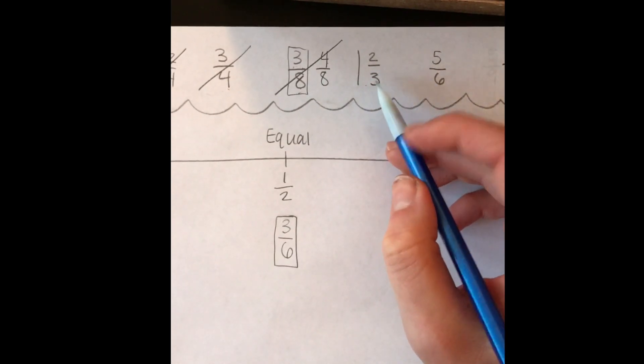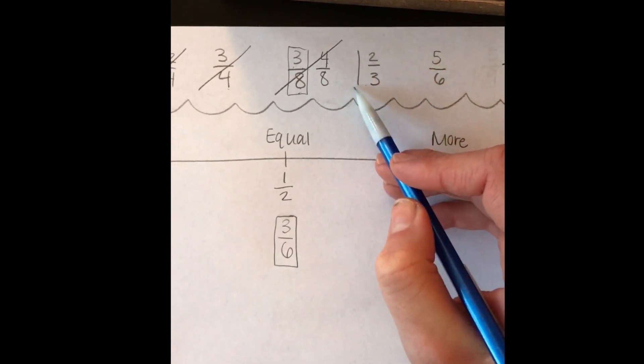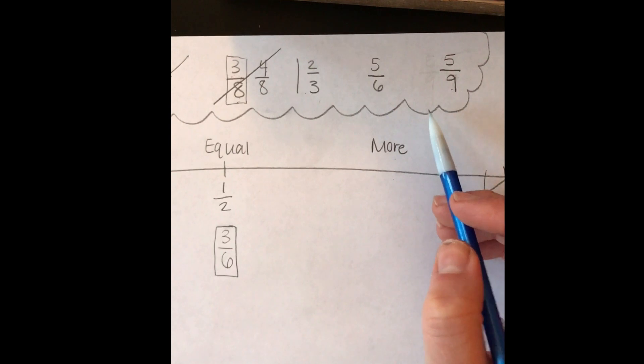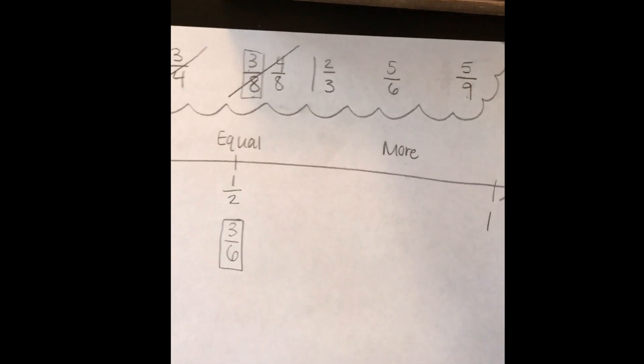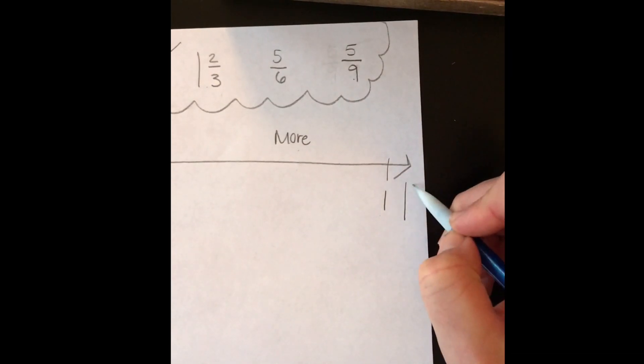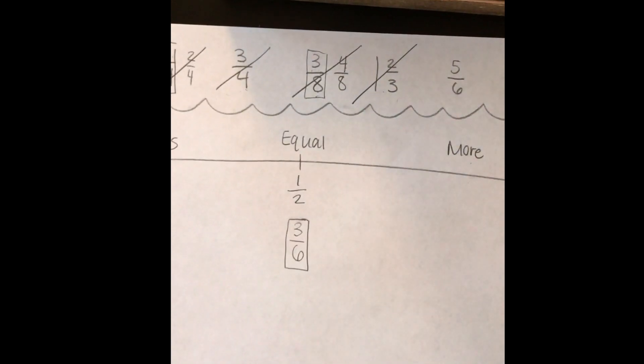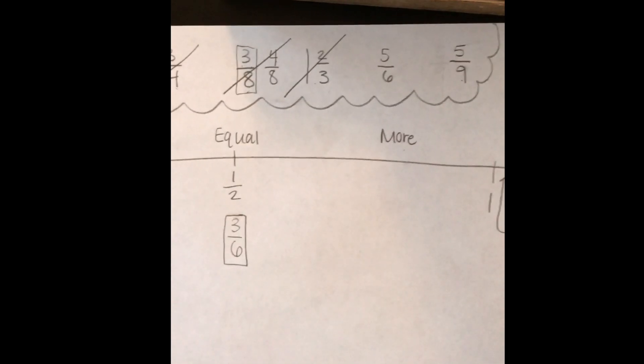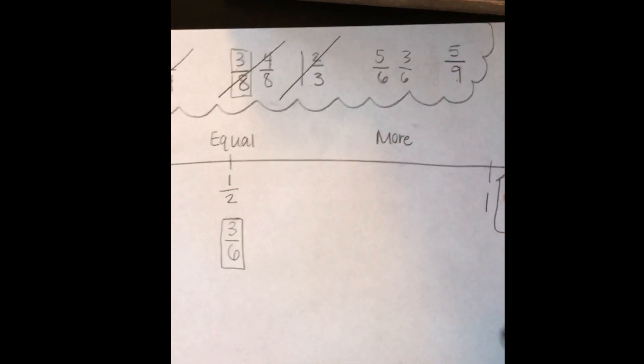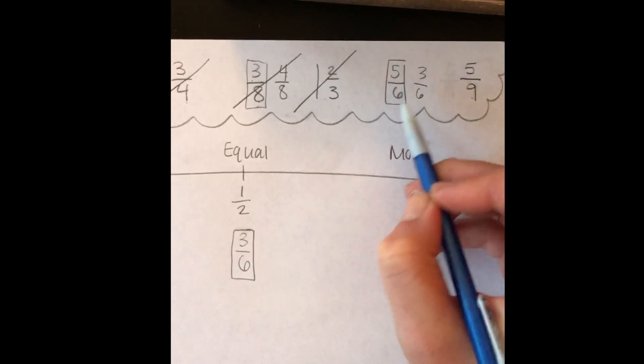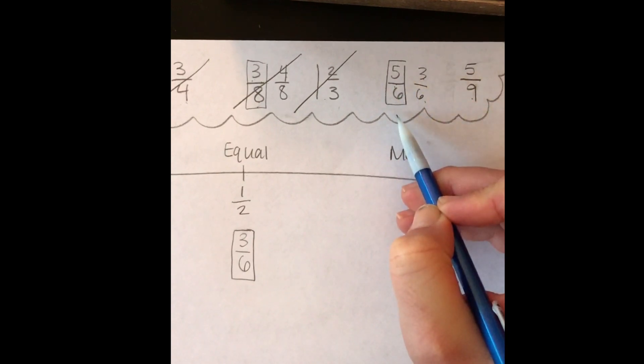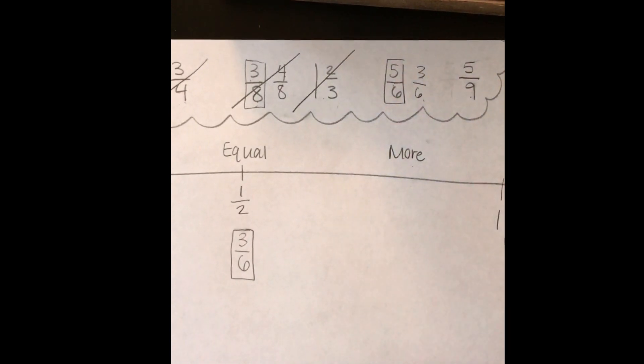My next fraction here is actually a mixed number because it has a whole number, 1, and a fraction, 2 thirds. I don't have any other mixed numbers here, so I'm just going to go ahead and place that on my number line because I know that's the biggest. It's the biggest because it's actually greater than 1, so I'm going to put it after the 1 and write 1 and 2 thirds. My next fraction is 5 sixths. Using my doubles facts, half of 6 is 3 because 3 plus 3 is 6. So that means 5 sixths is bigger than half because 3 sixths is smaller than 5 sixths. So that will go on our more than half side down at the bottom.